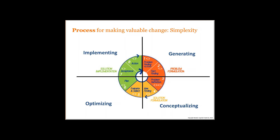We call it a wheel. Generation is looking for good problems to solve, getting fact-finding to understand, and then problem definition to really understand the problem. Then conceptualize it, pick a tool or two or three, optimize the solution, and then make sure it happens. Gain acceptance, try it, do it. If it doesn't work as well as it should, go around the wheel again. But it's a complete process.